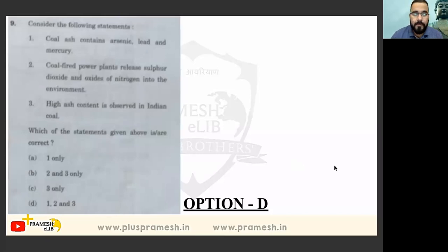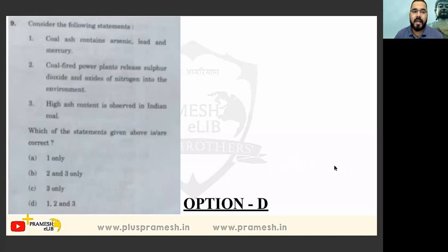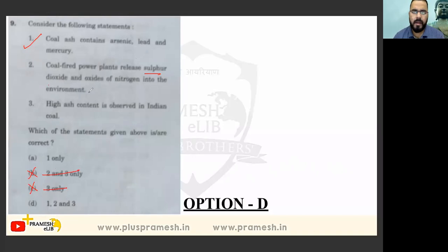This is a highly probable question covered by most textbooks. Coal ash contains arsenic, lead, and mercury — option one is totally correct, so wherever option one is not given, eliminate. Coal power plants release sulfur dioxide — also true. Both options point to option D. This is an easy question that can be managed straightforwardly.